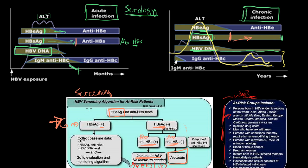Next, we're going to discuss what to do with someone once you've diagnosed chronic hepatitis B. We're going to review an algorithm, but the basic things we're checking are your liver enzymes, presence of hepatitis E antigen, and your DNA levels — those three things and why they're important.